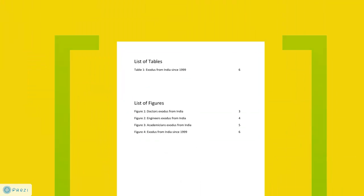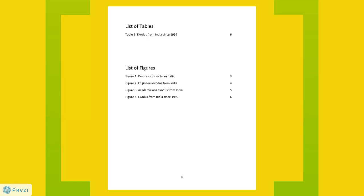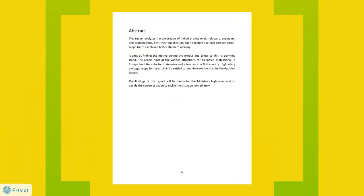Next we have the list of tables and figures, which enlists all the tables and figures like pie charts, etc., along with the page numbers they appear at. After this comes the abstract, which states in brief the idea behind the report, what it aims at, and how it will be beneficial for the organization.